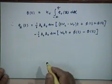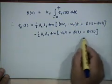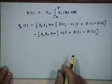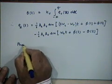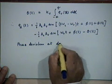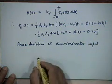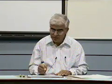The band pass filter output will be proportional to the second term, because that is at frequency omega_0; the first term at 2 omega_c - omega_0 is at a much higher frequency and will be removed by the band pass filter. Therefore, looking at the phase deviation at the input of the discriminator, the phase deviation is phi(t) minus theta(t) — not either phi(t) or theta(t) alone — which is what it was in the case of the PLL as well.